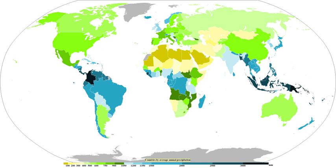Hail forms in storm clouds when supercooled water droplets freeze on contact with condensation nuclei such as dust or dirt. The storm's updraft blows hailstones to the upper part of the cloud; the updraft dissipates and the hailstones fall down, back into the updraft, and are lifted again. Hail has a diameter of 5 mm or more. Within METAR code, GR is used to indicate larger hail of at least 6.4 mm diameter. GR is derived from the French word grêle.